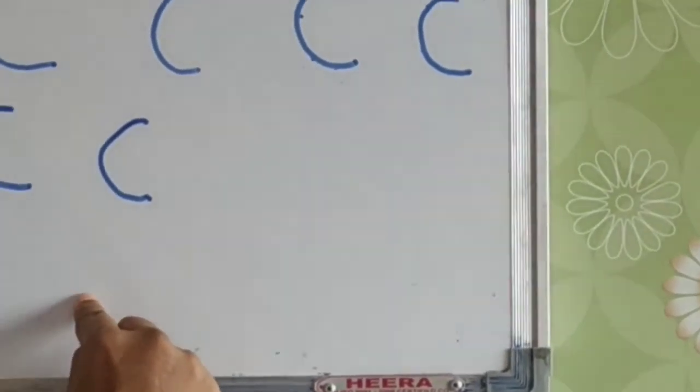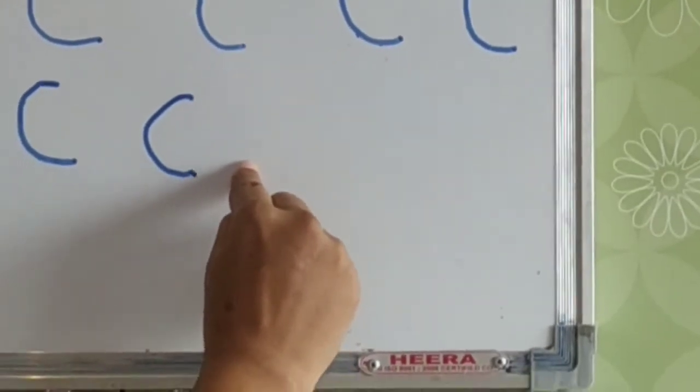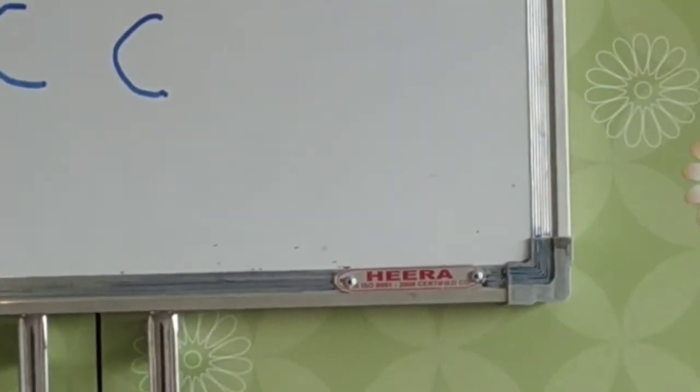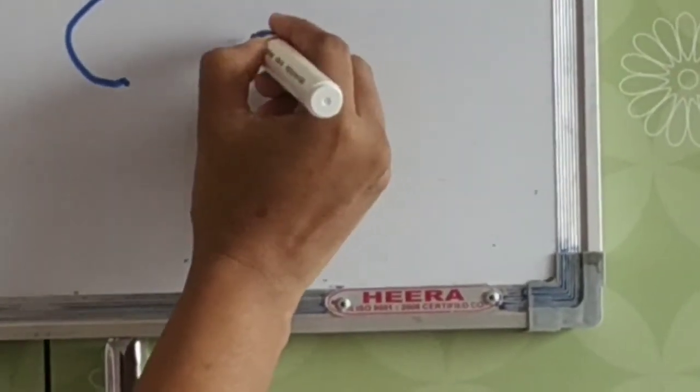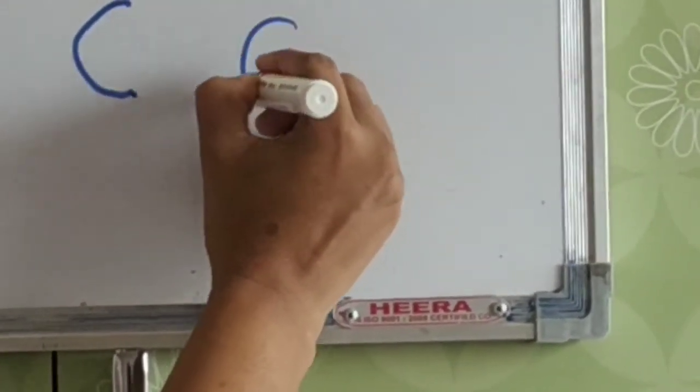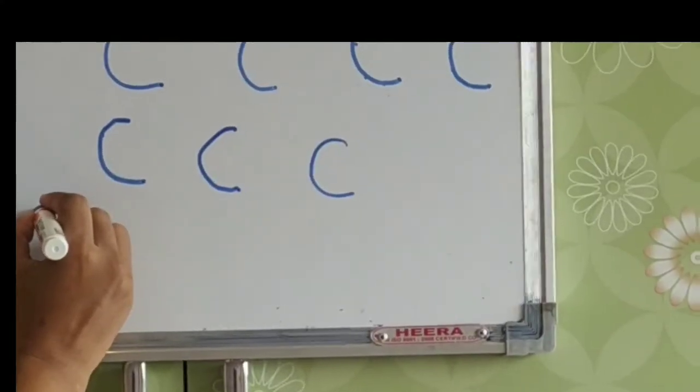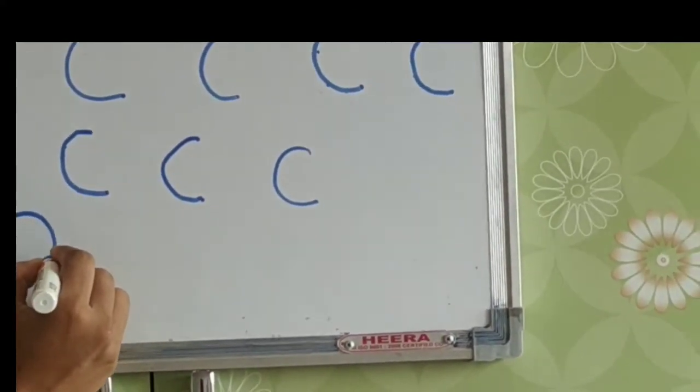So once they can get the concept of making the left curve, then they will write with the crayons. This is left curve. And then next is right curve.